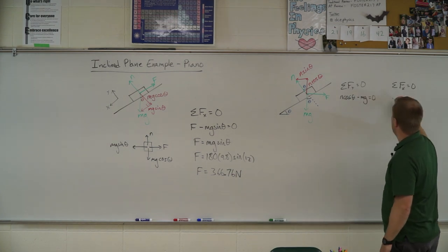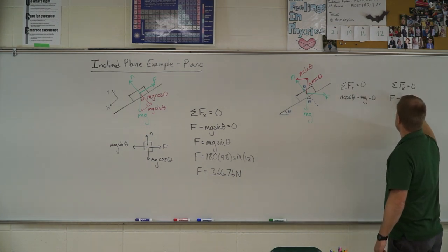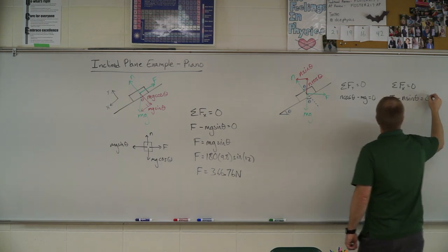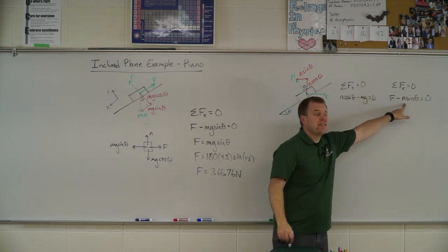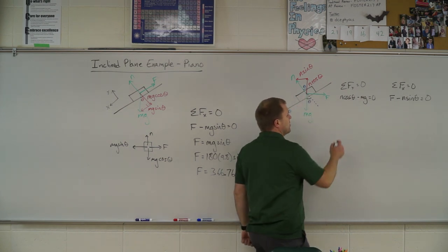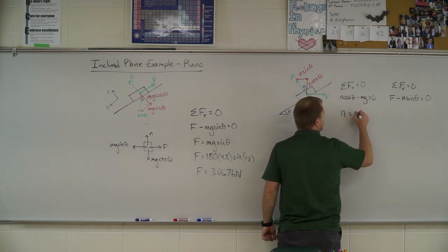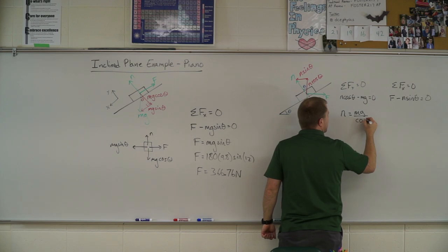And in the x direction, I have force minus n sine theta equals zero. So in order to find the force, I need to first find the normal force. So I'm going to have to do that in my y direction here. So I get normal force is equal to mg divided by the cosine of theta. Go ahead.